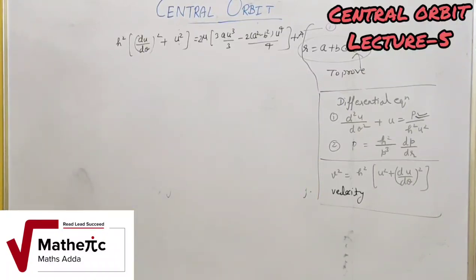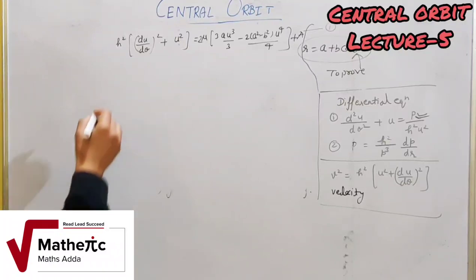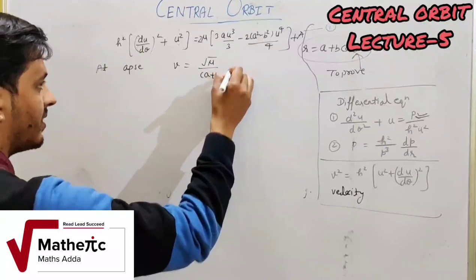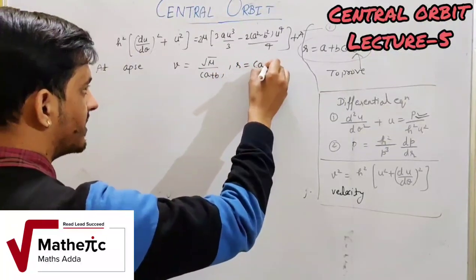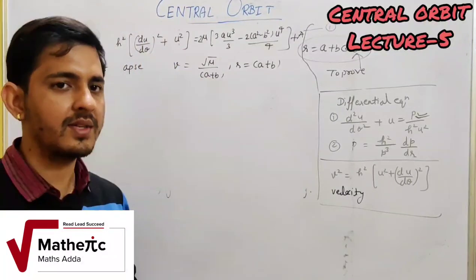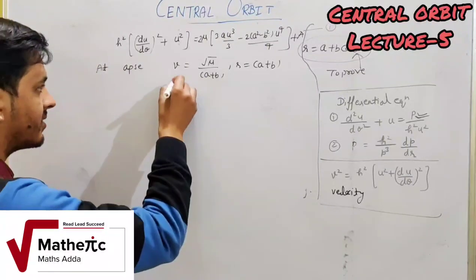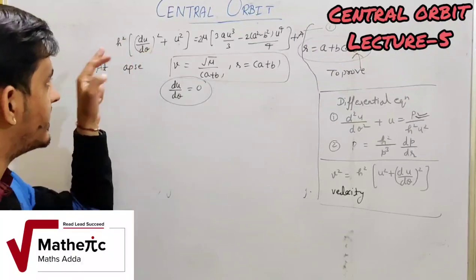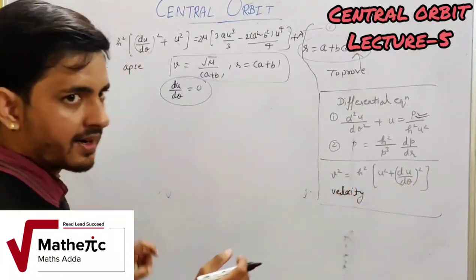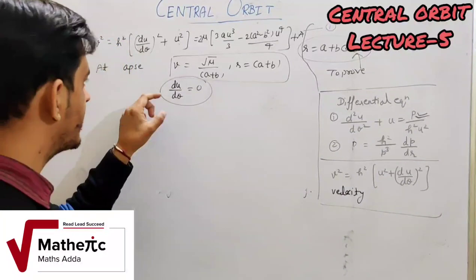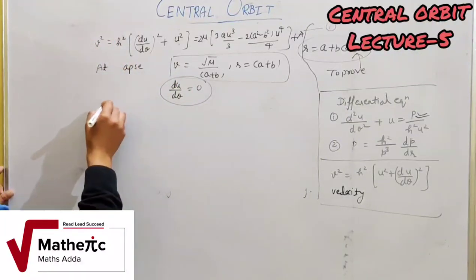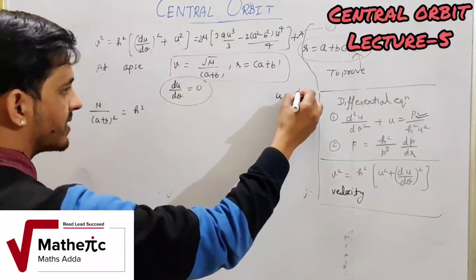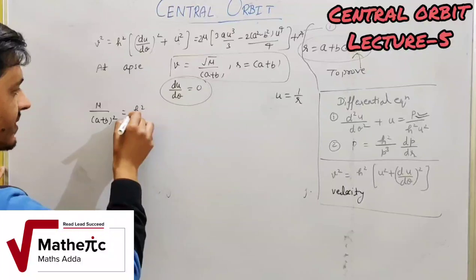The conditions given: velocity v = √(μ/(a+b)), and r = a + b was given. At apse, as shown in the first video, du/dθ = 0. Applying these conditions: h²[u² + (du/dθ)²] represents v². So v² = μ/(a+b)², u = 1/r = 1/(a+b), and (du/dθ)² = 0.